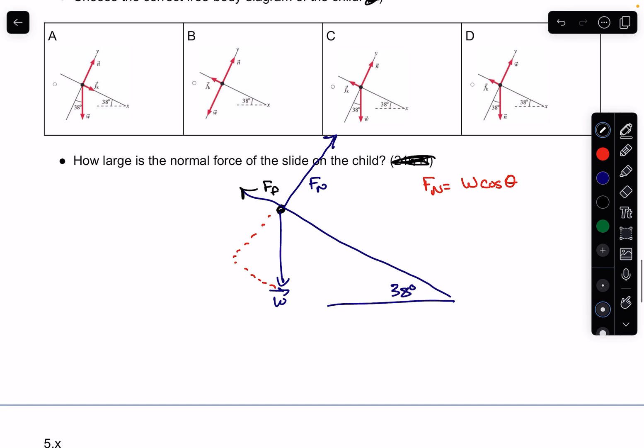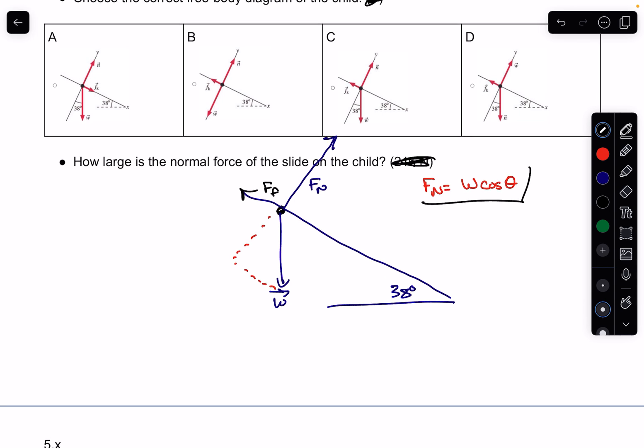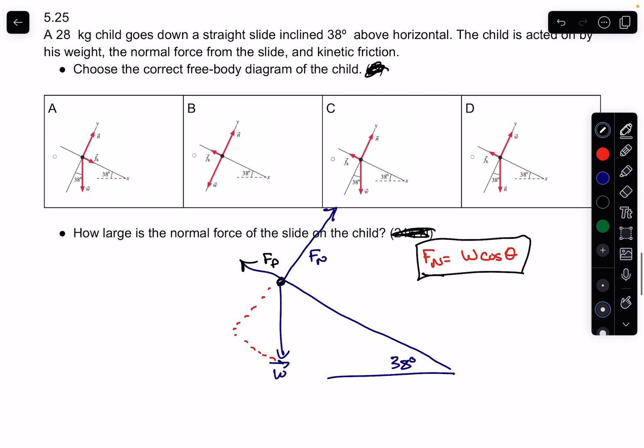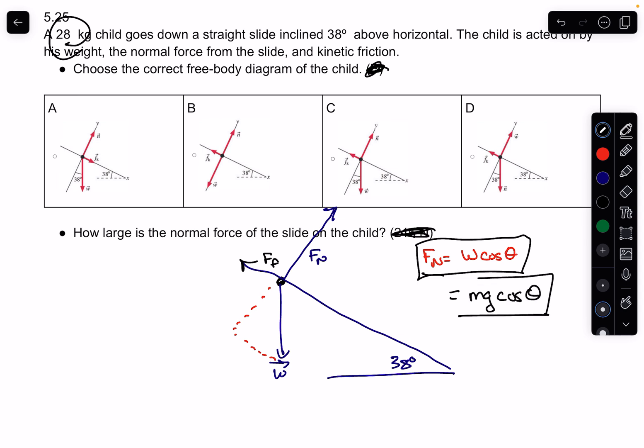Now, how large is the normal force on the child? I've basically just given it. It's just the weight times cos theta. We know the mass is 28 kilograms, or we can say mg cos theta. That is going to be your answer. Plug the numbers in, and you'll get it.